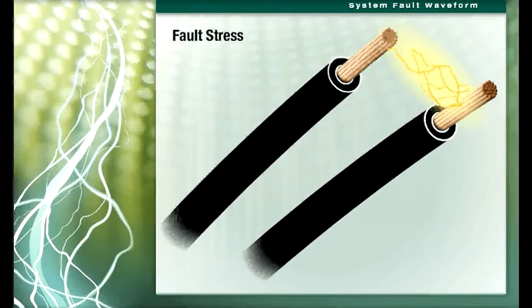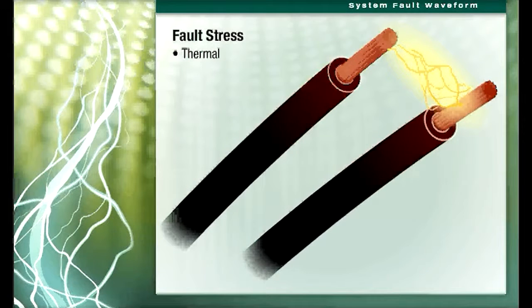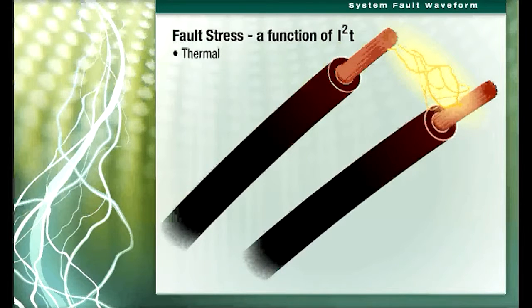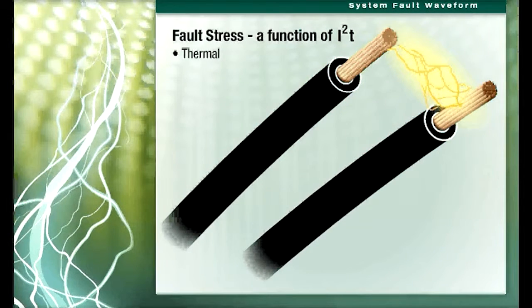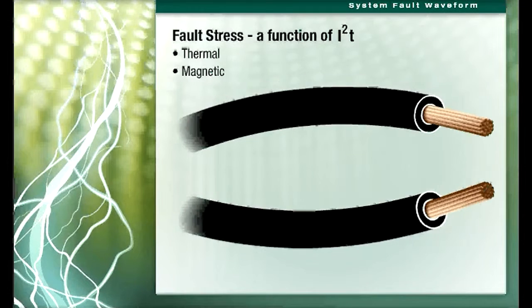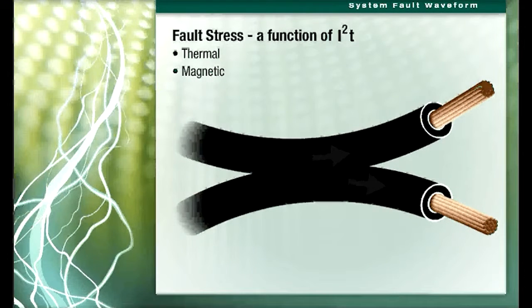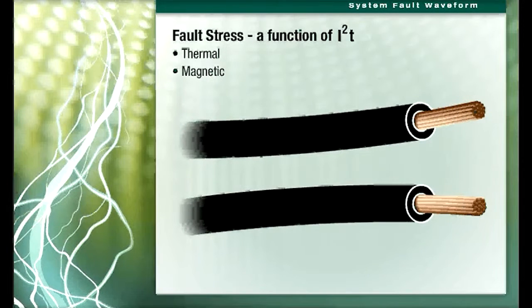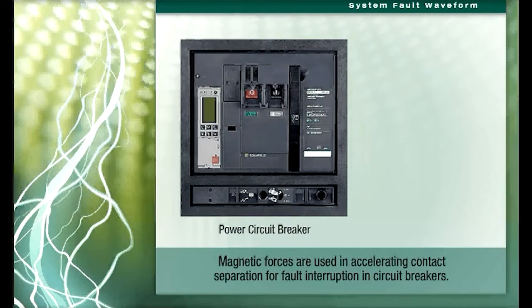Fault currents impose two stresses on electric power systems. The first is thermal: the thermal effects cause heating of the conductors in the system and are the result of the square of the current and the length of time that the current flows. The second stress is magnetic, also a function of the square of the current. It results in forces that tend to force parallel conductors apart for currents flowing in opposite directions, and pull conductors together for currents flowing in the same direction. In some cases the magnetic forces can be an advantage — for example, when they are used in accelerating contact separation for fault interruption in circuit breakers.